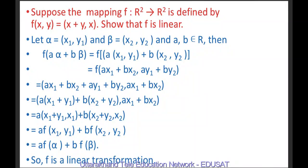Now suppose the mapping is defined by F(x,y) = (x+y, x) — the first term is the sum of x and y, and the second term is x. Show that F is linear. F will be linear if it preserves vector addition and scalar multiplication, or equivalently if F(Aα + Bβ) = A·F(α) + B·F(β). Let α = (x1, y1) and β = (x2, y2) where A and B are real numbers.